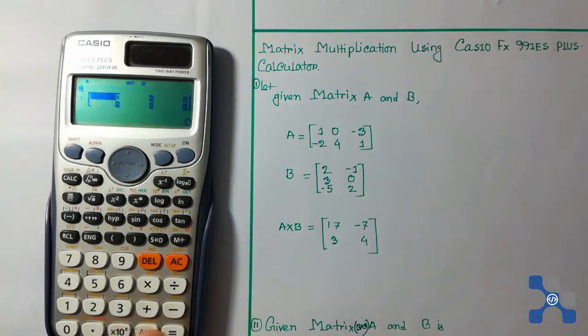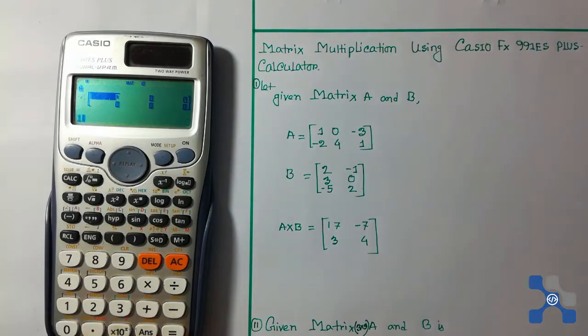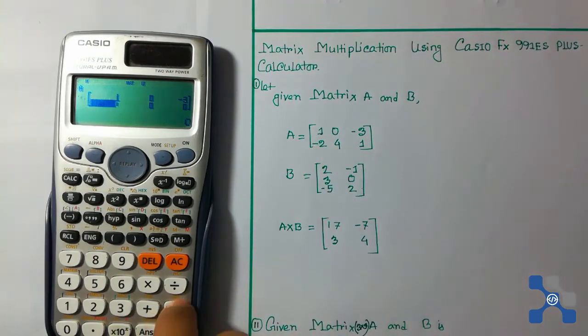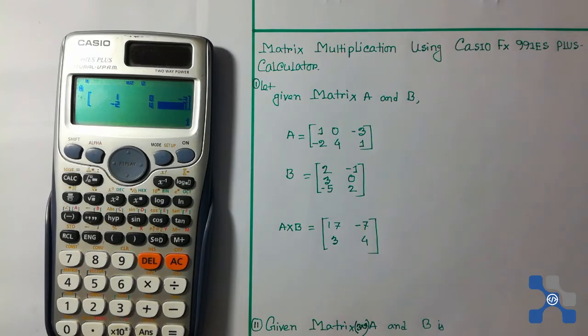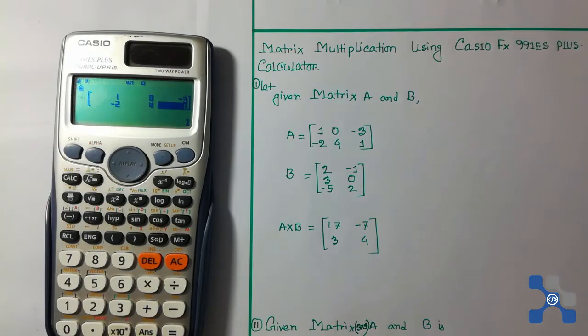Here is the first row: 1, 0, -3. The second row is -2, 4, 1. Now we need to press the shift button and then press 4. We see 2 data, so we need to press button 2.